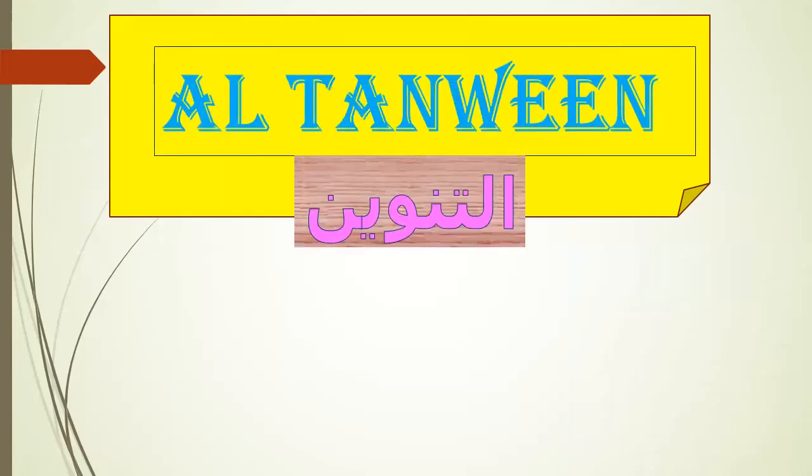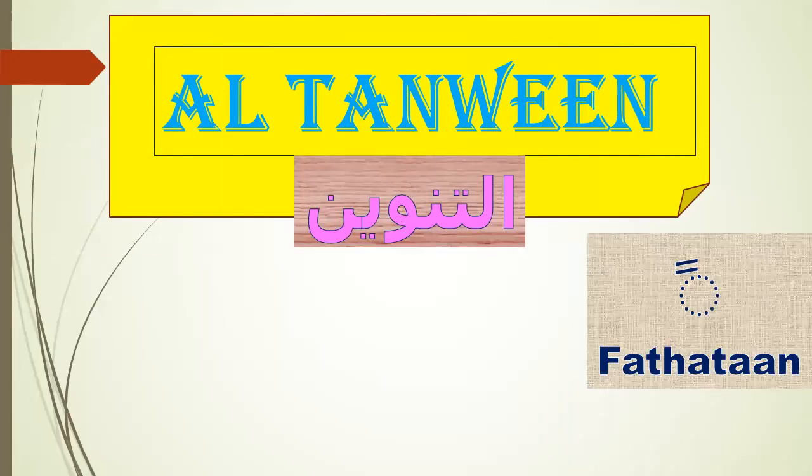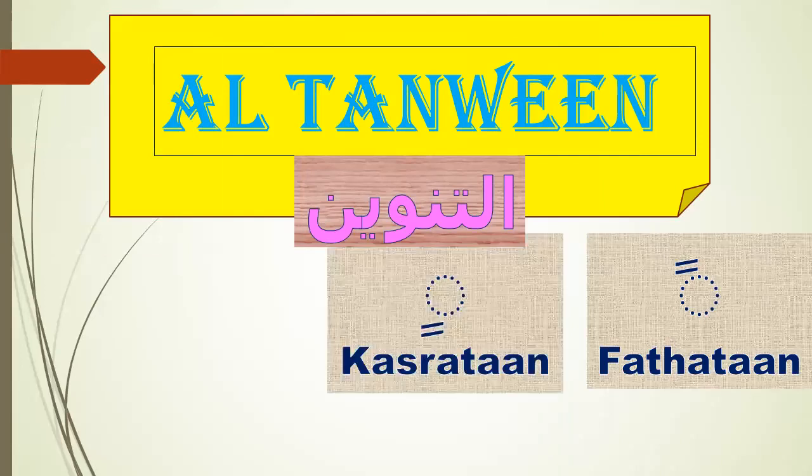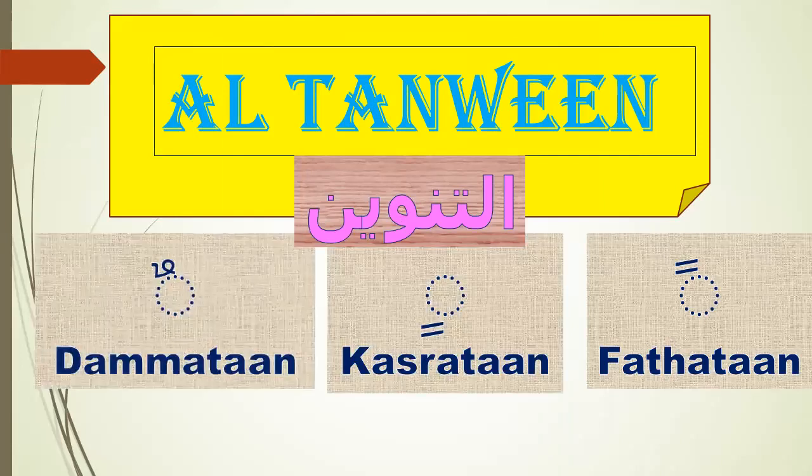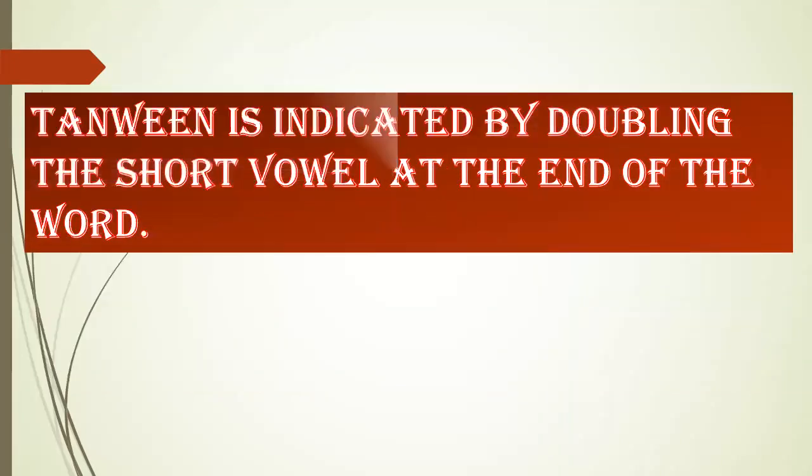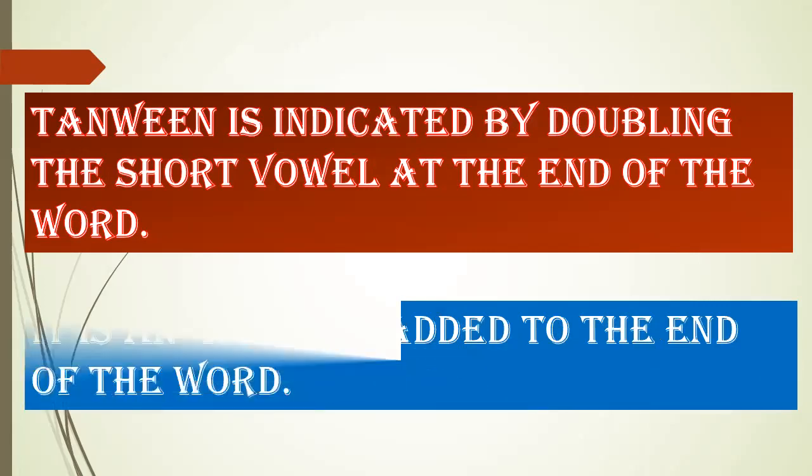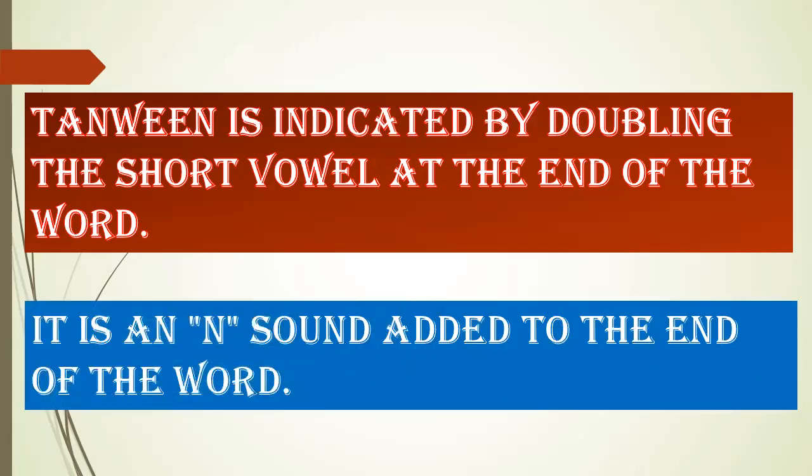At-tanween means fathatan or kasratan or dhammatan. Tanween is indicated by doubling the short vowel at the end of the word. It's an N-sound added to the end of the word.